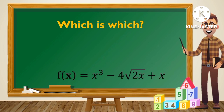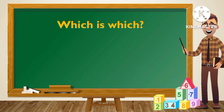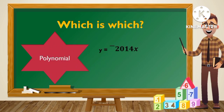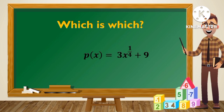Number 2: f of x is equal to x cubed minus 4 square root of 2x plus x. This is not a polynomial function. Number 3: y is equal to negative 2,014x. This is an example of a polynomial function. Number 4: p of x is equal to 3x raised to the 1 fourth power plus 9. This is not a polynomial function.